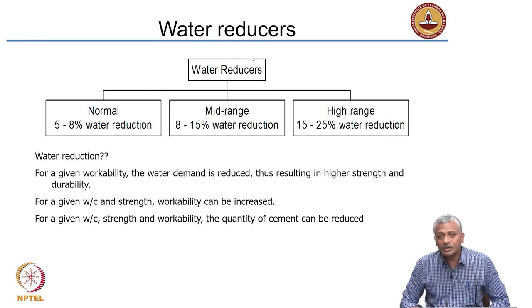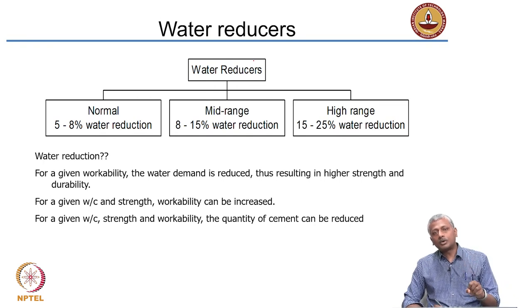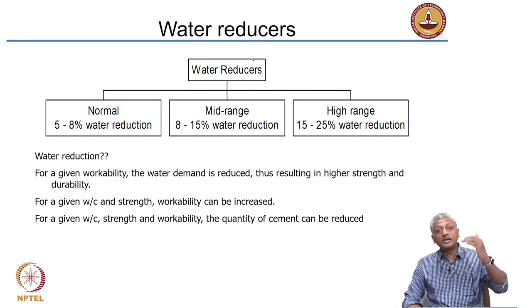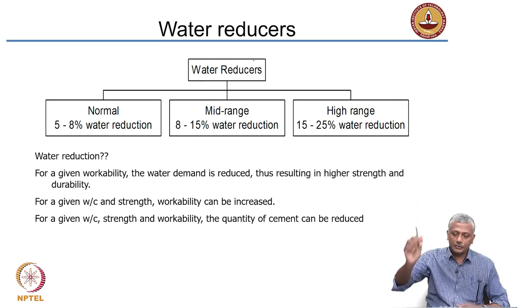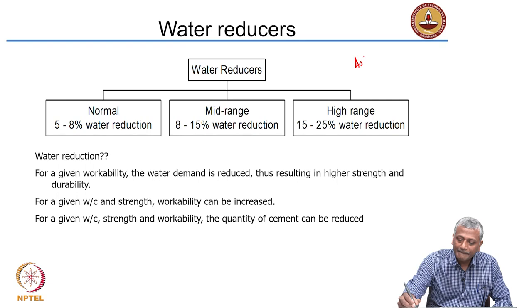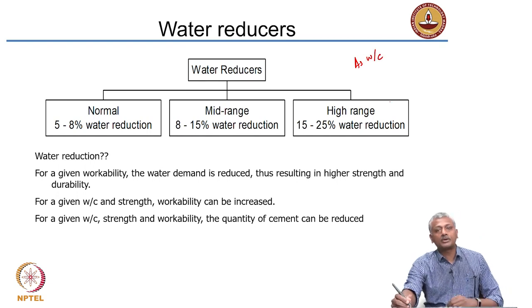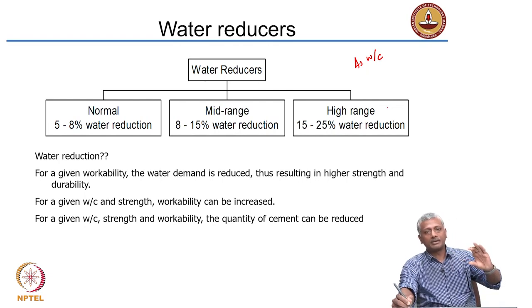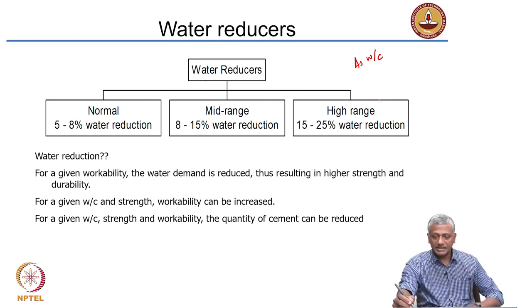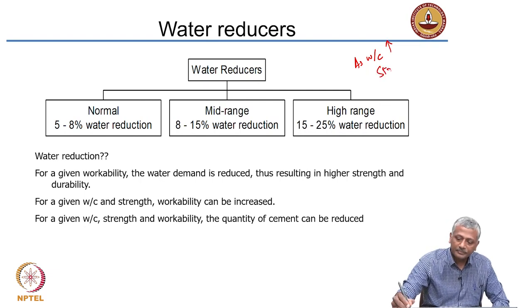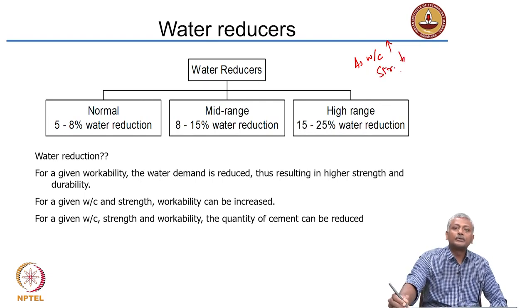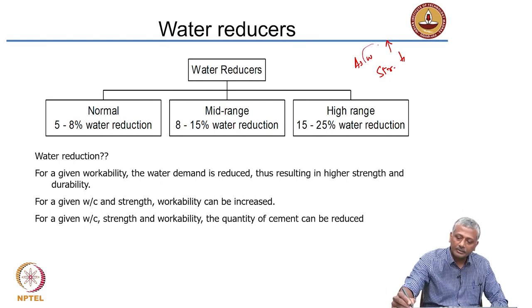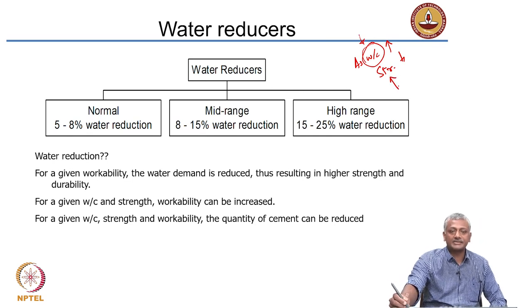When you use a water reducer, you can bring down the amount of water needed for workability. When you bring down the water, strength automatically goes up. The important concept to remember is the water-to-cement ratio — the amount of water in concrete relative to the amount of cement. As the water-cement ratio goes up, strength comes down. So if you are able to reduce the water-cement ratio by using water reducers, you are increasing the strength.